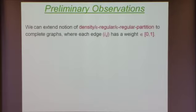Some preliminary observations. You can think of a graph as taking a complete graph and assigning weights to the edges, where an edge gets weight one and a non-edge gets weight zero. What we will work with is complete graphs where each edge gets a weight that is not necessarily zero and one, but some real number between zero and one.